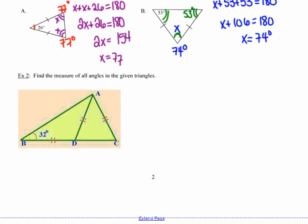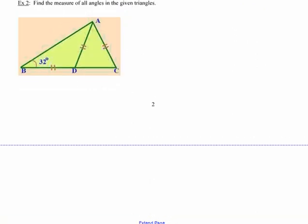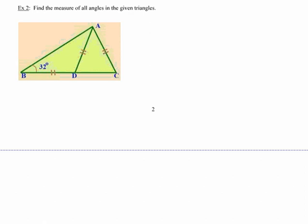So those are both very middle school-y kinds of concepts. Down in example two, I'm going to apply what I now know to solve something a little bit more complex and a little bit more sophisticated. In example two, they say find the measures of all of the angles in the given triangles. And again, notice that the diagram is significantly more complex.